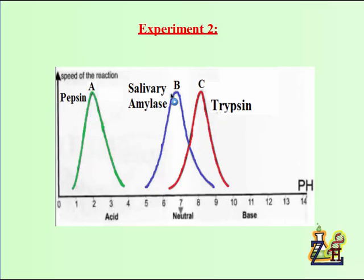Curve A is for pepsin, curve B is for salivary amylase, curve C is for trypsin. And as we see here that the speed of reaction of each enzyme is varying as a function of pH. Sometimes it's null, near zero, and sometimes it reaches a peak or the top or the best speed of reaction. Here we call it the peak.